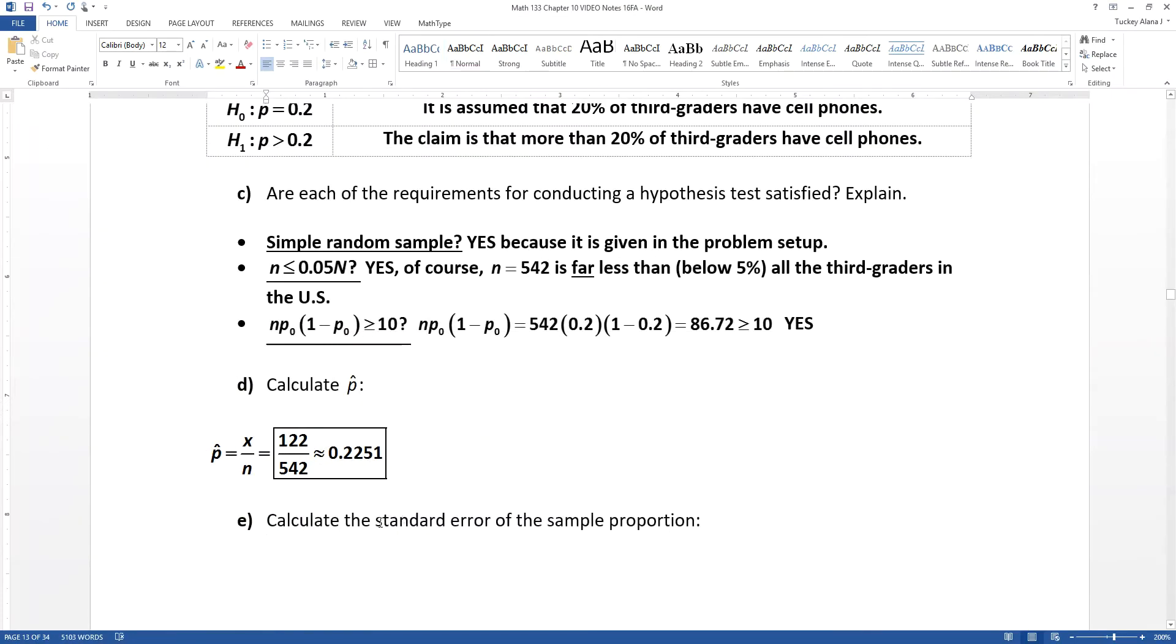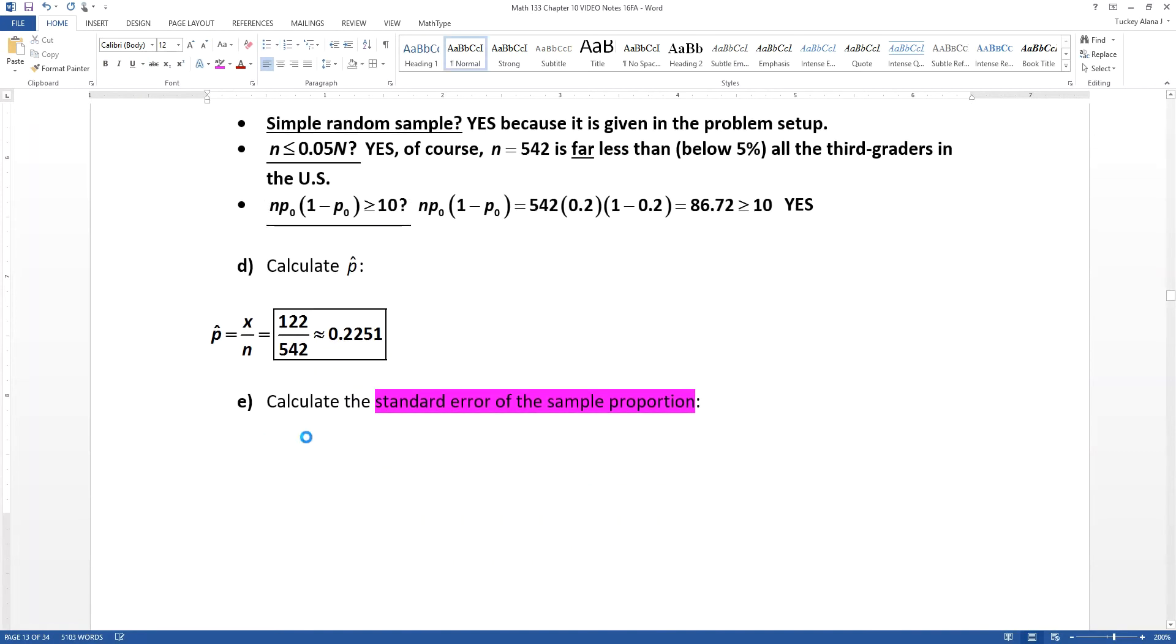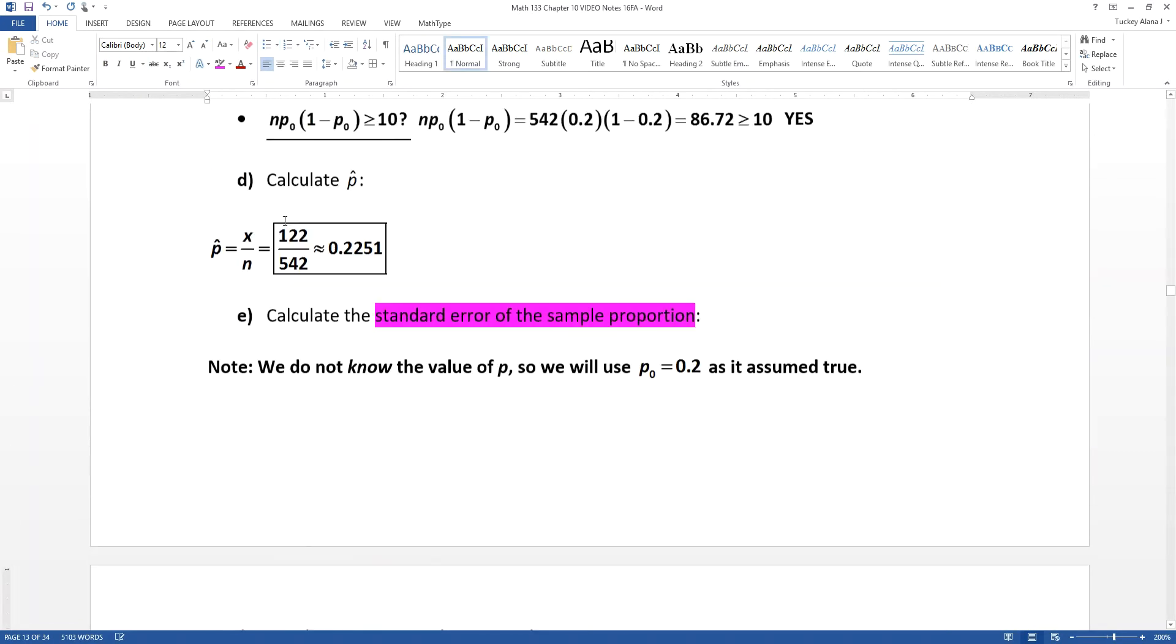Now the standard error of the sample proportion, if you recall, we have a formula for back a few pages ago. It's the standard error of the P-hat. So we don't really know what P is, but we're going to use the assumed P value of 0.2 from our hypotheses.